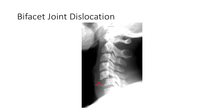Bilateral facet joint dislocation is an unstable dislocation with complete anterior dislocation of the vertebral body, carrying a higher risk of cord damage. The mechanism is extreme flexion of the head and neck. Radiographic features are best seen on the lateral view. There is complete anterior dislocation of the affected vertebral body by half or more of the vertebral body AP diameter, disruption of the posterior ligament complex and the anterior longitudinal ligament, and a bow-tie or bat-wing appearance of the locked facets.